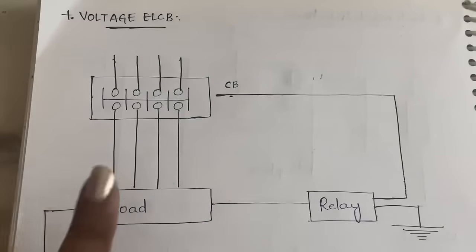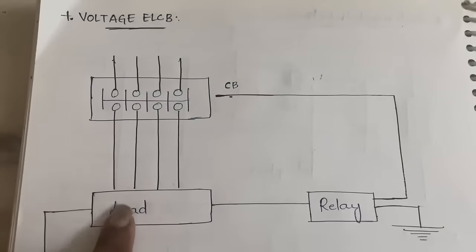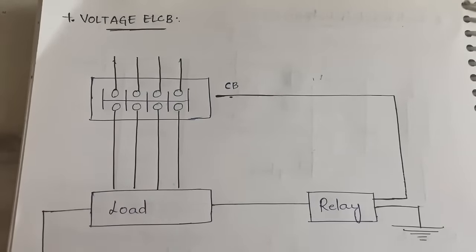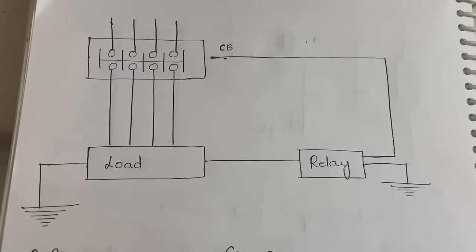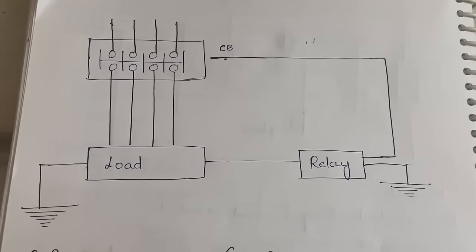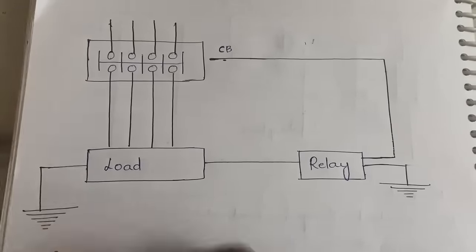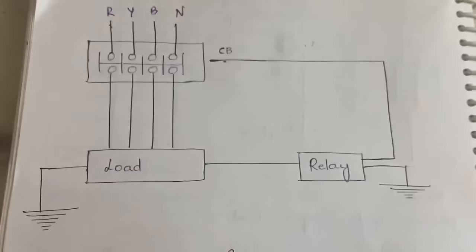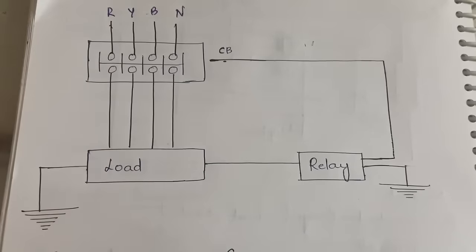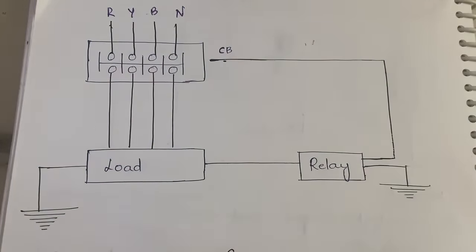Let us first understand the voltage operated ELCB. This is the diagram, and here we have a three-phase connection R, Y, B, and this is neutral. Now let us see how the flow of current goes in case of normal condition.